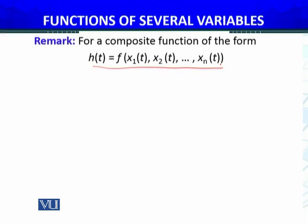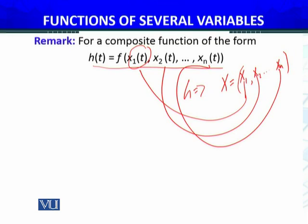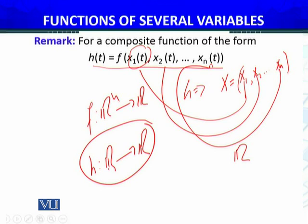For a composite function of this form, this is also considered a composite function because each xi... where g is replaced by x, which are x1, x2, through xn. Each xi is a real valued function with domain R. So f is a function of several variables from R^n to R, making the composite function from R to R a real valued function. Real valued functions could be defined by using functions of several variables and by composition.